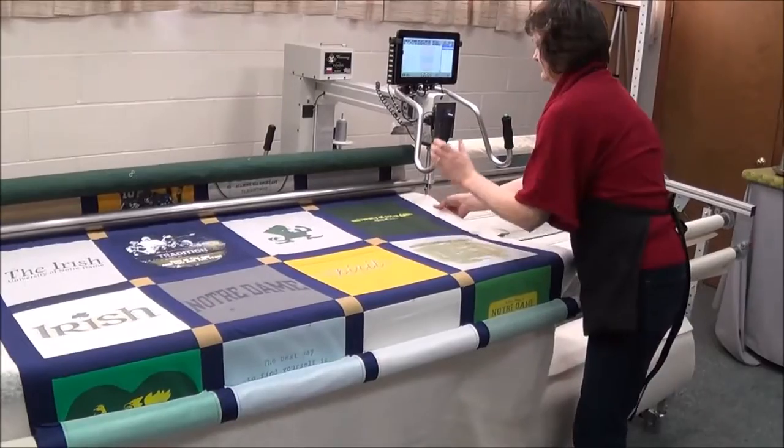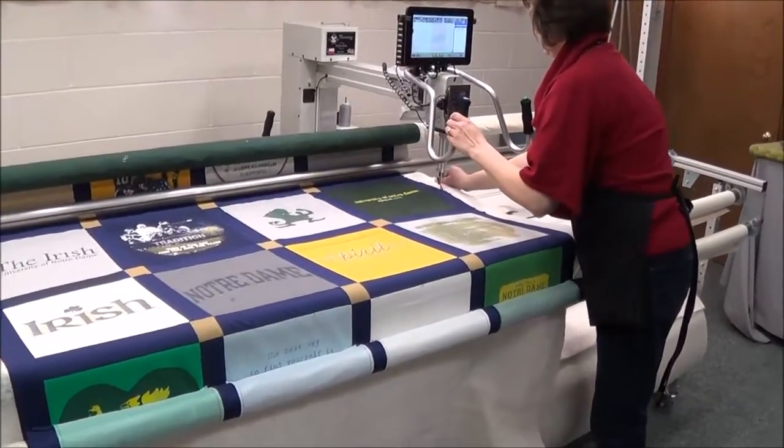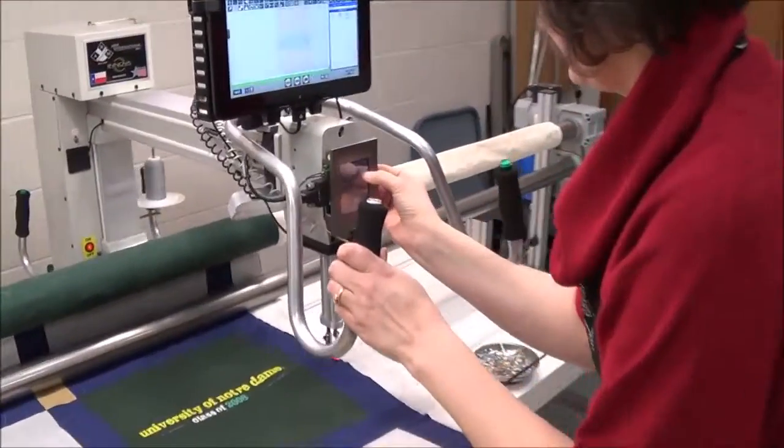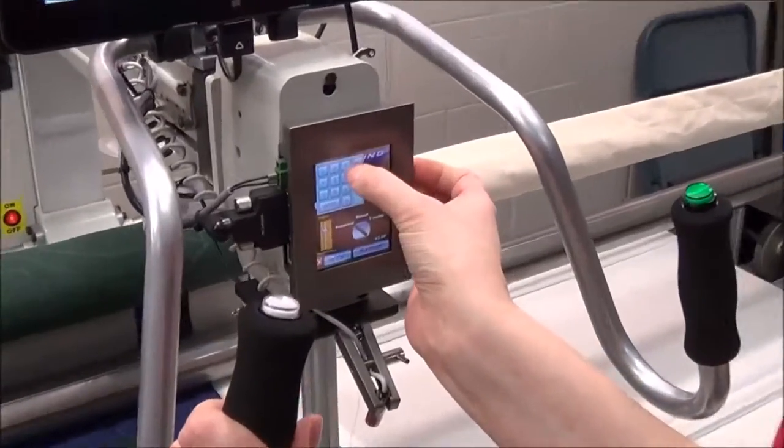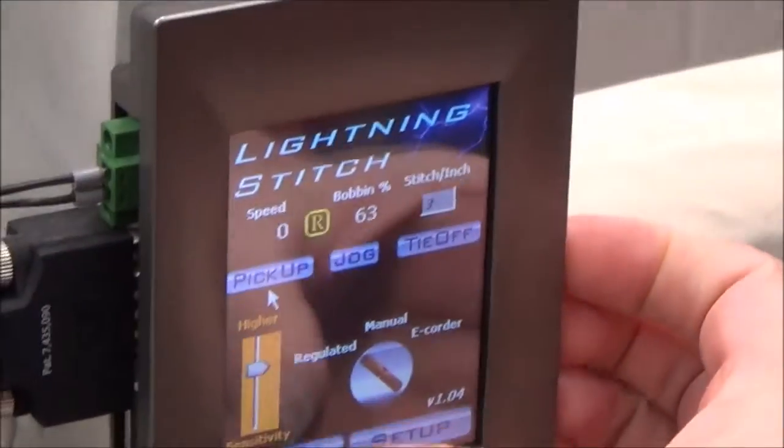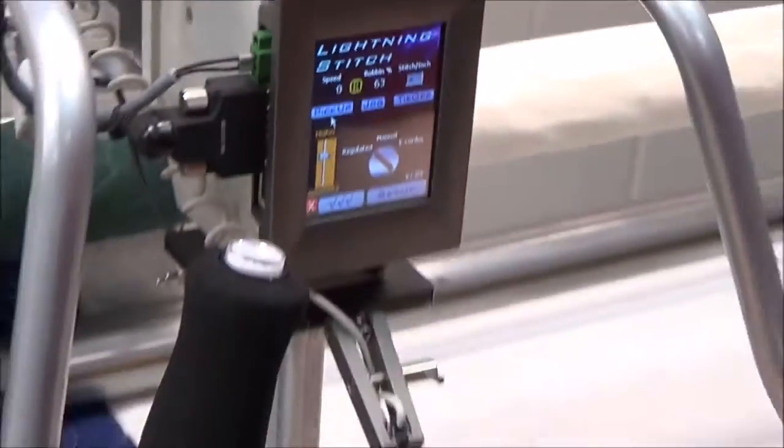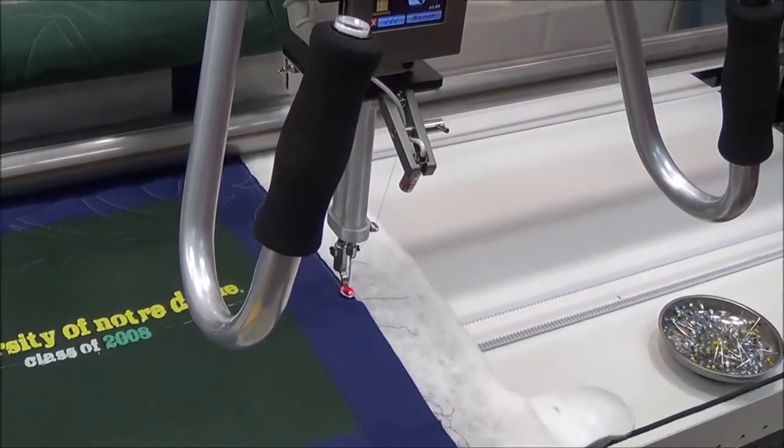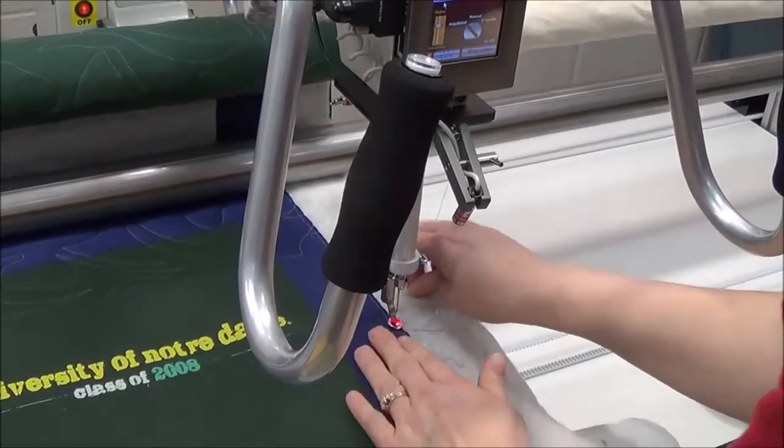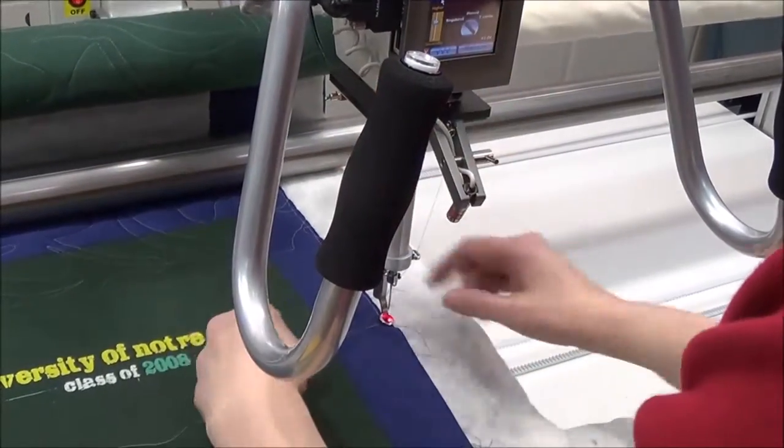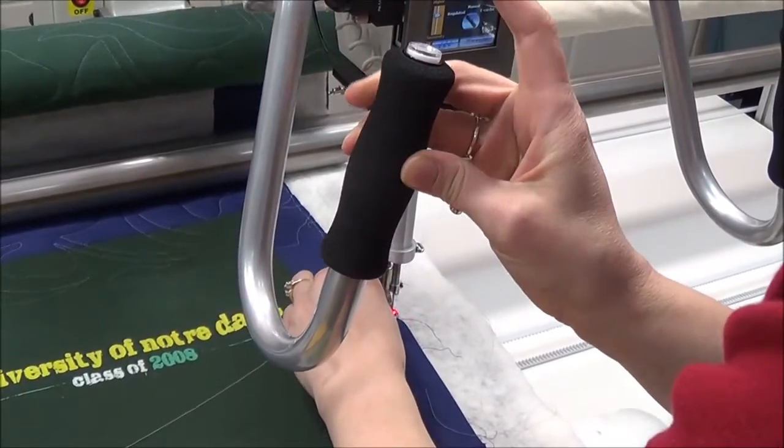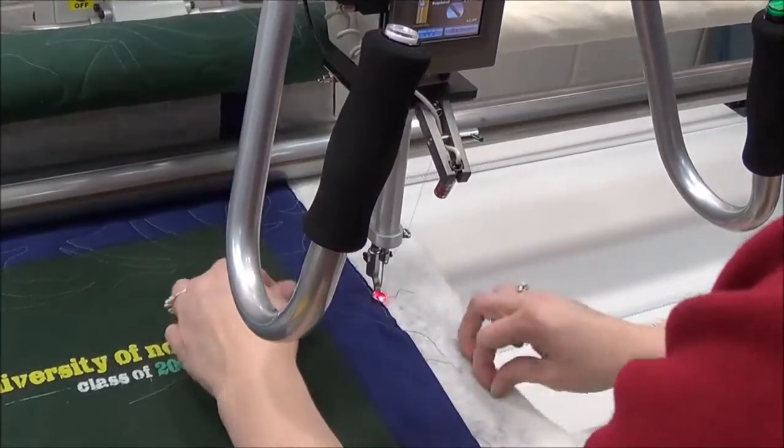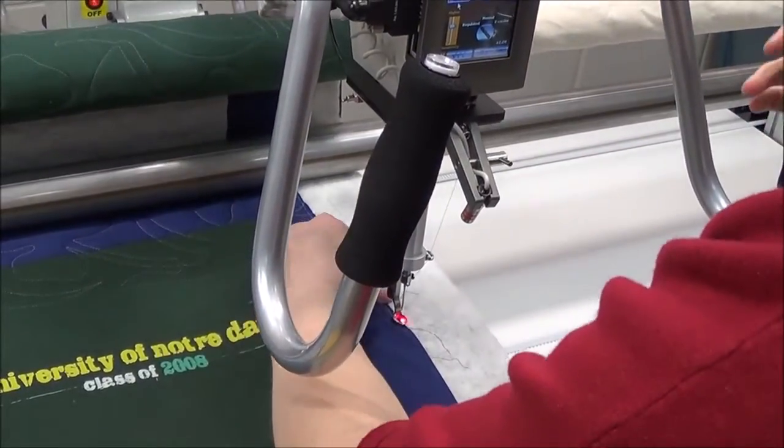Before I quilt any more I need to baste down the sides so I'll use my lightning stitch at three stitches per inch. I want to make sure that the backing still looks nice and smooth and that's fine. Now I can baste down the edge.